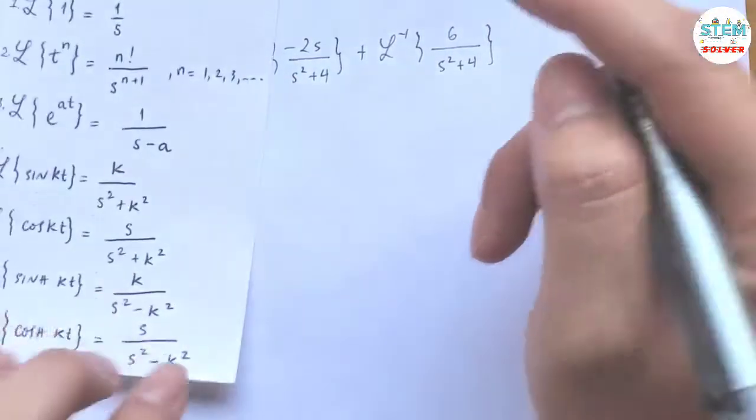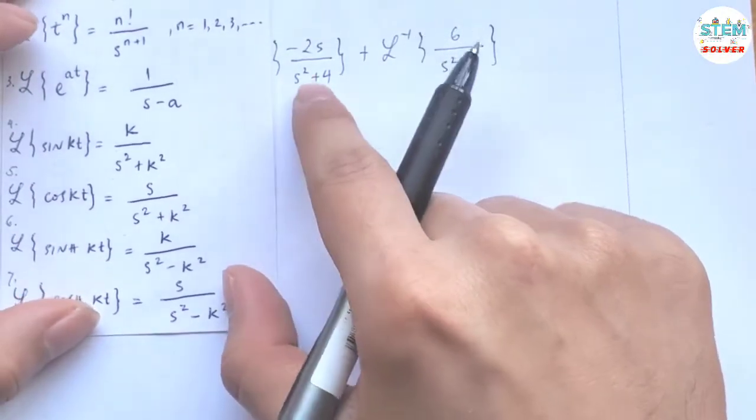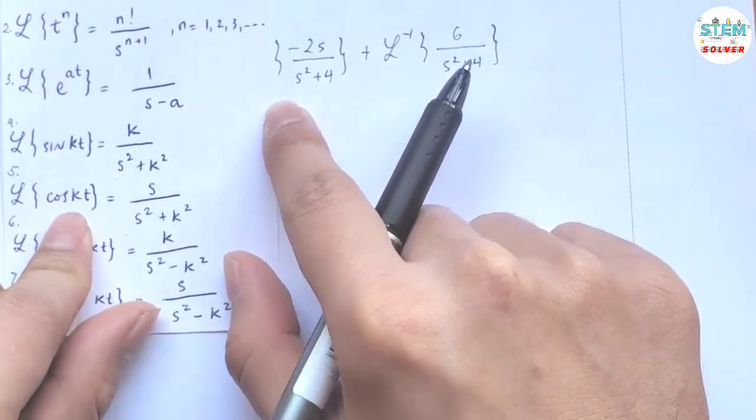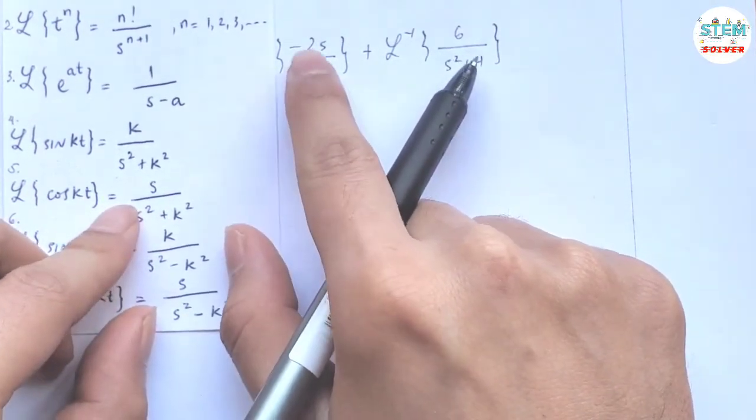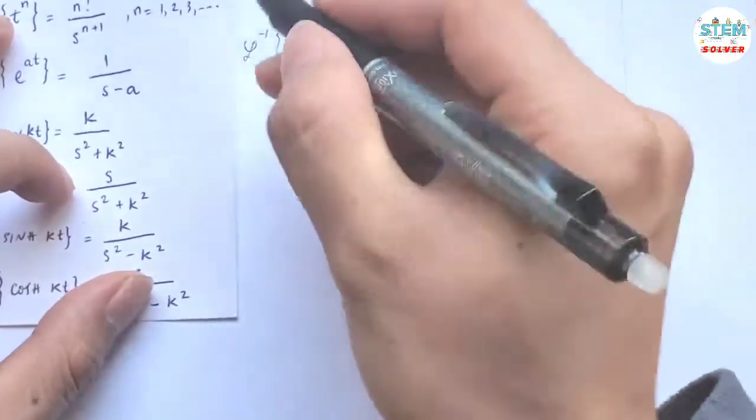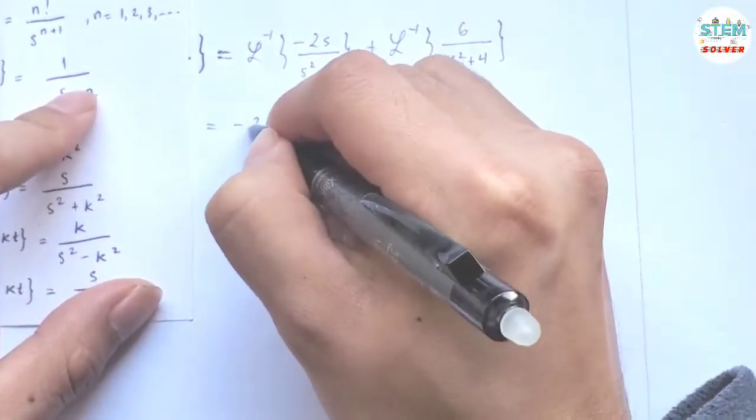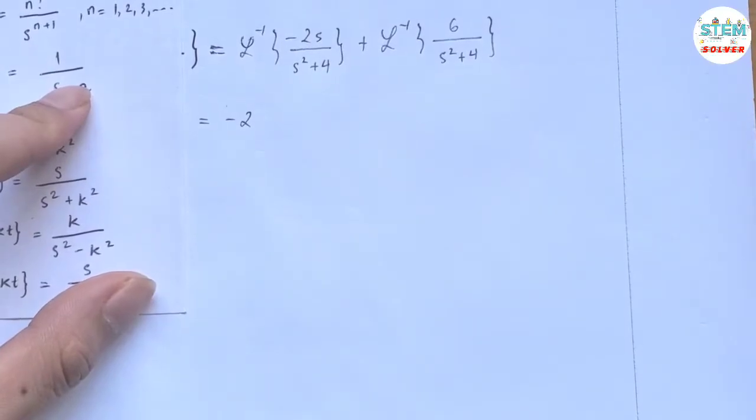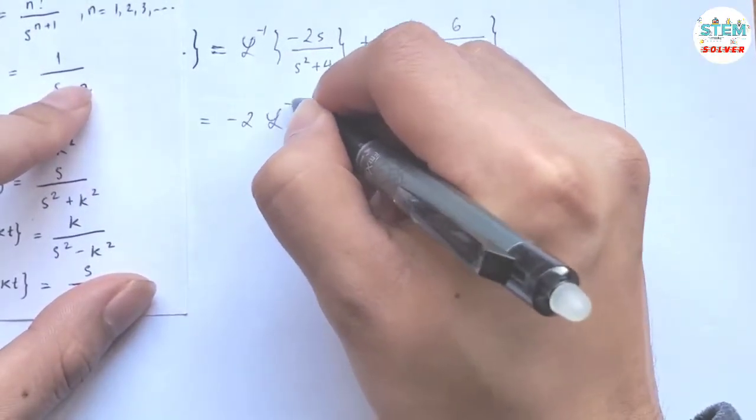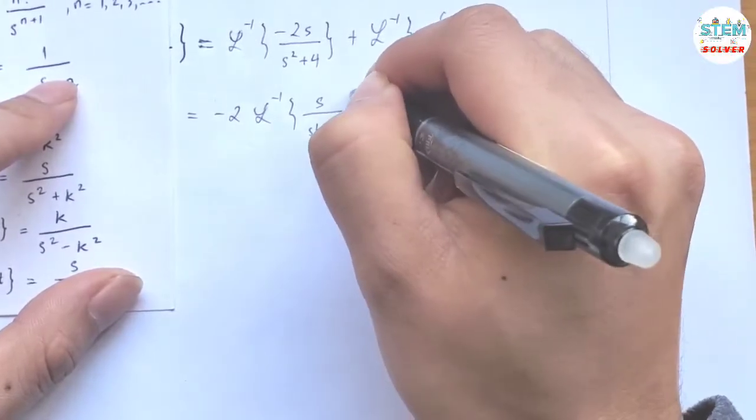Now for this one, we almost have a form of cosine, with one exception: we have negative 2 on top. So I'm going to pull out the negative 2. Then I have L inverse of x over x squared plus 4.